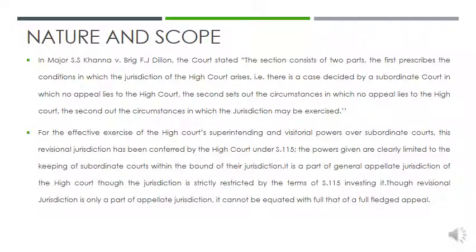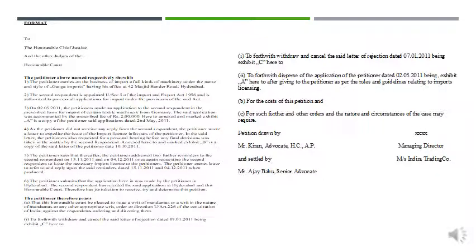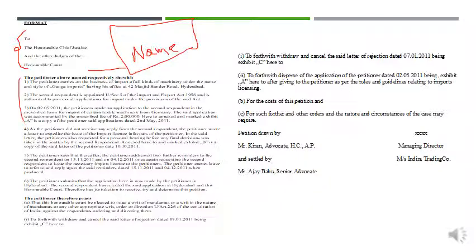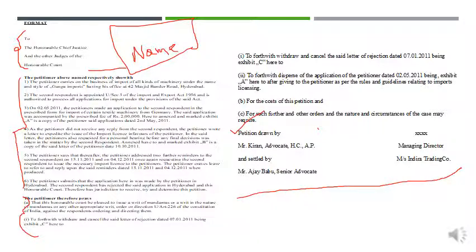Now let us look at the format of appeal. The appeal is addressed to the court. You must also mention the name of the parties — that is, appellant versus respondent. Following this, the grounds of appeal are listed, and then the prayer is stated.